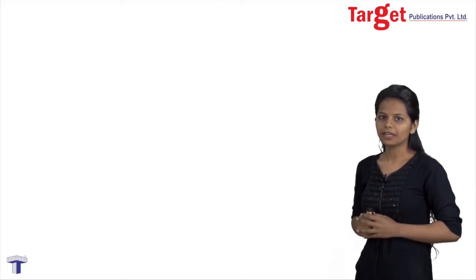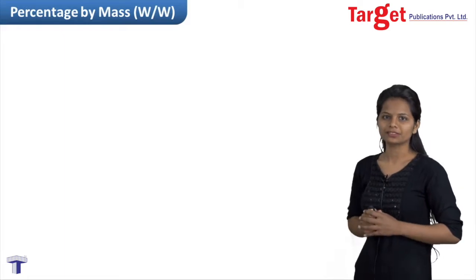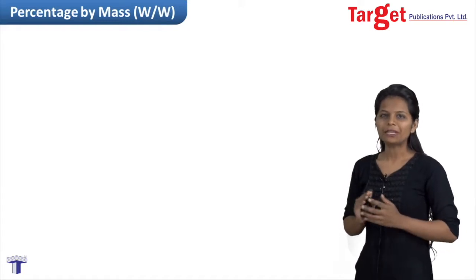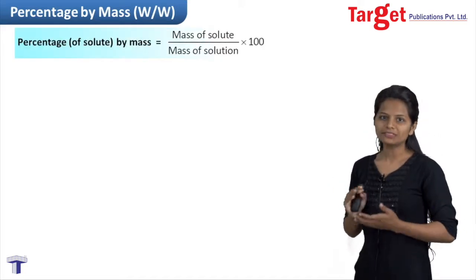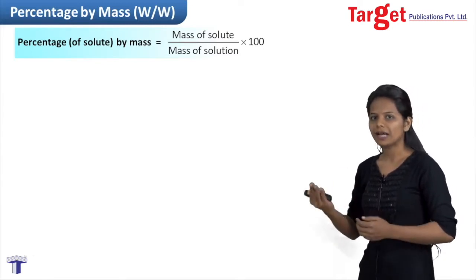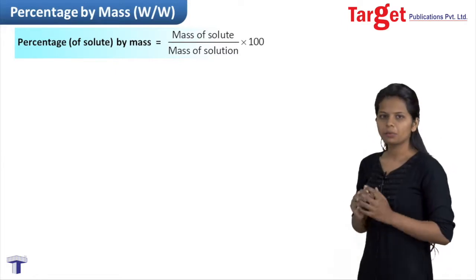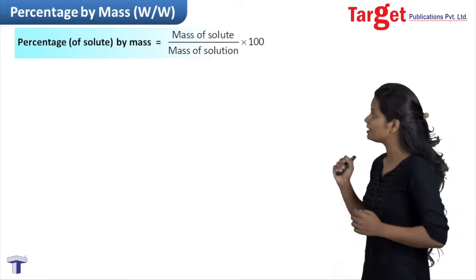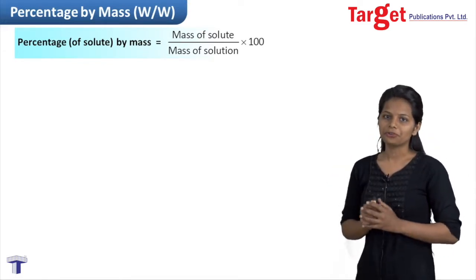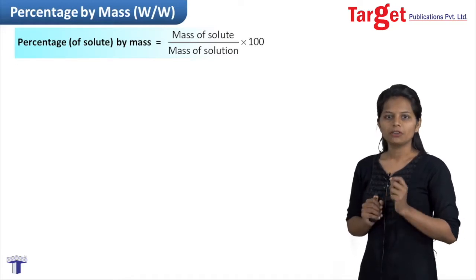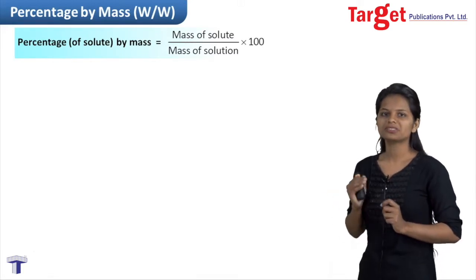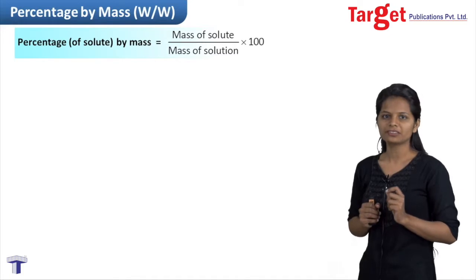Now we are going to have a look at the quantitative way of expressing concentration. The first one is percentage by mass. Percentage by mass simply means how much is the mass of solute present in the entire mass of solution. In a mathematical term, percentage by mass of solute is equal to mass of solute divided by mass of entire solution, multiplied by 100. In this chapter, we follow the convention that wherever we represent the solvent a suffix 1 is used, and wherever we talk about a solute present in the solution, it is followed by a suffix 2.